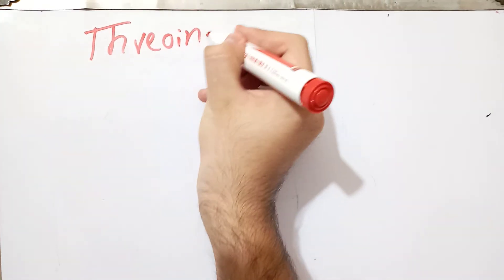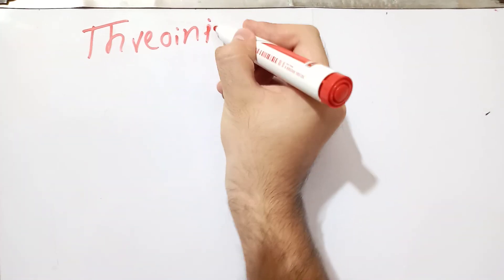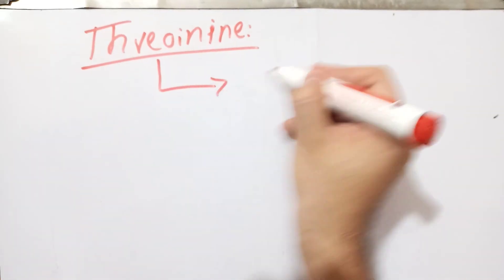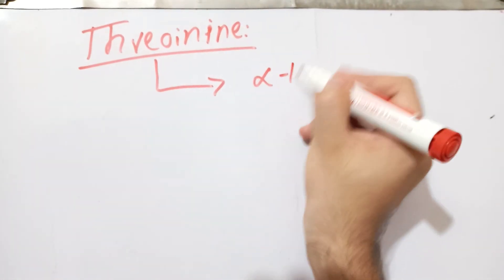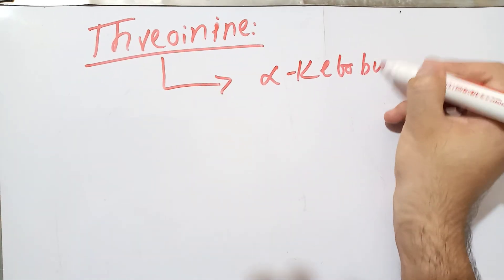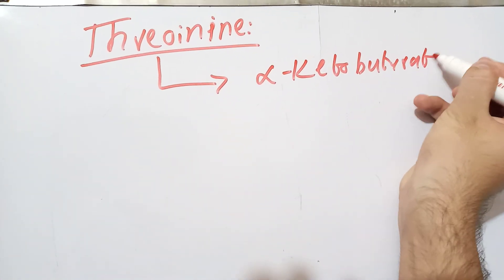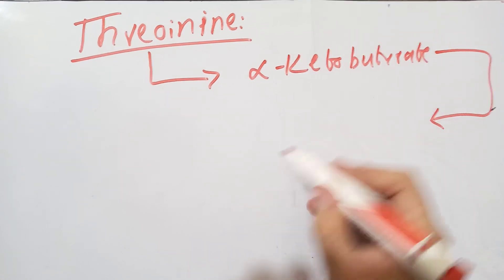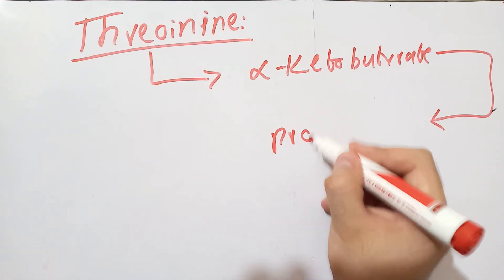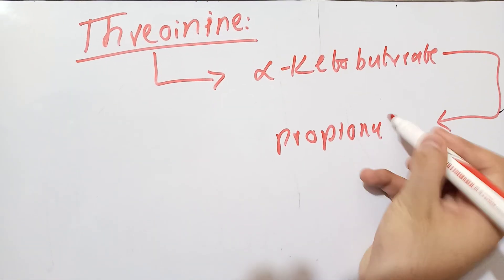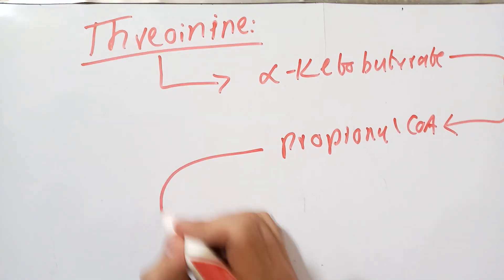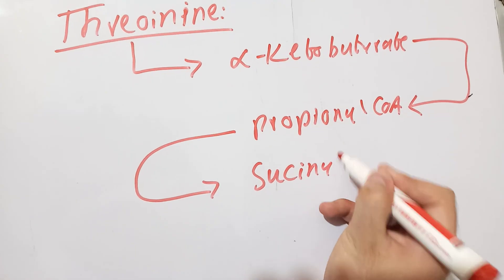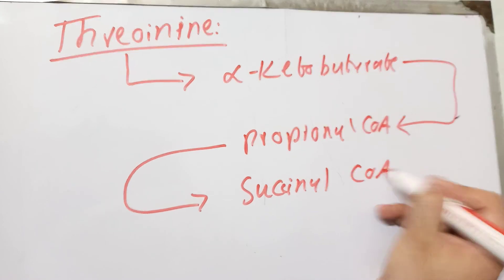Now let's talk about other amino acids that lead to the formation of succinyl coenzyme A. Threonine is first converted into alpha-ketobutyrate, which just like in the previous reaction, is then converted into propionyl coenzyme A, and then propionyl-CoA is converted into succinyl coenzyme A.